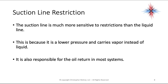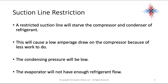On the opposite side of the system, the suction line is much more sensitive to restrictions than the liquid line, because it operates at lower pressure and carries vapor instead of liquid. It's also critical because the suction line is responsible for oil return to the compressor in most systems. A restricted suction line will starve the compressor and condenser of refrigerant, causing a low amp draw on the compressor due to having less work to do. The condensing pressures will also be low.